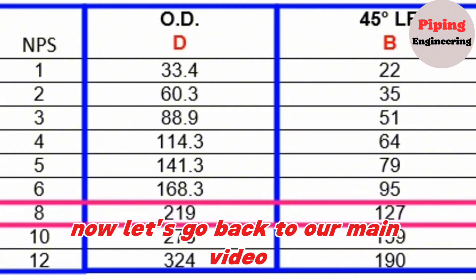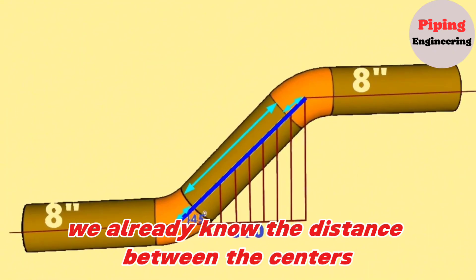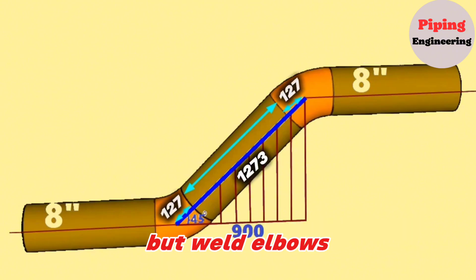Now let's go back to our main video. We already know the distance between the centers of the elbows and the lengths of the 45-degree butt weld elbows.